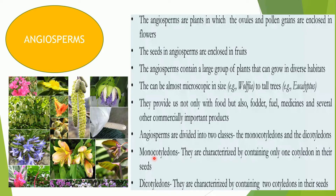Now what is this division based on? This division is based on the number of cotyledons present. Now what is a cotyledon? The cotyledons are structures — the seed leaves — which will be storing the food for the growing embryo.